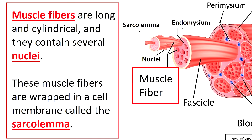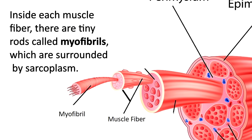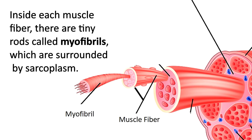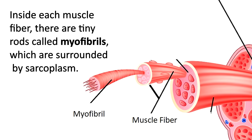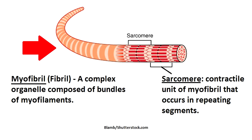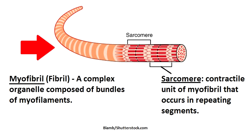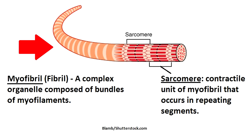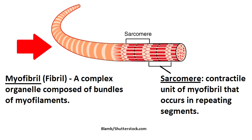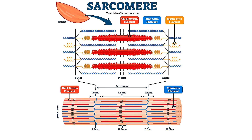Now let's take a look at some of the individual muscle cells, which are called muscle fibers. These fibers are long and cylindrical, and they contain several nuclei, which are located around the peripheral portion of the cell. These muscle fibers are going to be wrapped in a cell membrane called the sarcolemma. Inside each muscle fiber, there are tiny rods called myofibrils, which are surrounded by sarcoplasm. These myofibrils, also called fibrils, consist of repeating segments called sarcomeres, which are the tiny units responsible for skeletal muscle contraction.